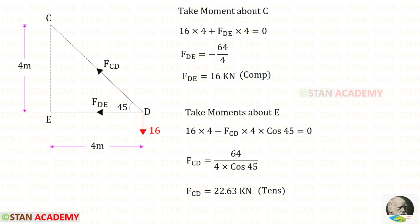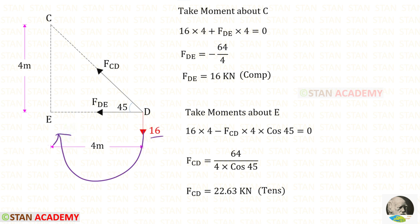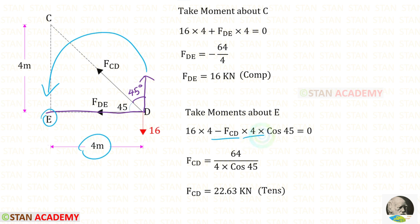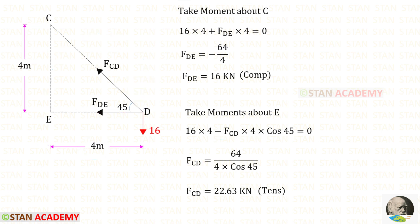That means FDE is compressive. Now let us take moment about E. When we take moment about E, we should not consider FDE. The remaining forces are FCD and 16. 16 is acting in the clockwise direction, so it will be positive and the distance is 4. About point E, FCD is not perpendicular. We can resolve FCD with respect to DE. To make it perpendicular to DE, we have to make FCD vertical, which requires 45 degrees. About point E, FCD is acting in the anticlockwise direction, so it will be negative and the distance is 4. Since we have resolved it, we have to multiply with cos 45. For FCD, we will get a positive value, meaning it is tensile.